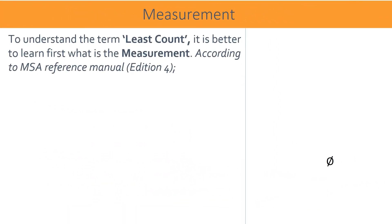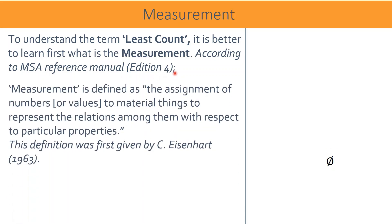To understand the term least count, it is better to first learn what measurement is. According to the Measurement System Analysis (MSA) reference manual, edition four, measurement is defined as the assignment of numbers or values to material things to represent the relations among them with respect to particular properties.